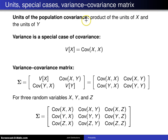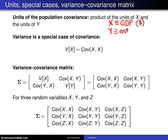The units on the population covariance are the product of the units on the random variable X and the units on the random variable Y. For example, if X is the gross domestic product for a country measured in dollars, and the random variable Y is energy consumption measured in kilowatt hours, then the covariance between X and Y will have units of dollar-kilowatt hours. Sometimes these units are the same, and sometimes they are different, but in either case you just take the product of the units of X times the units of Y.